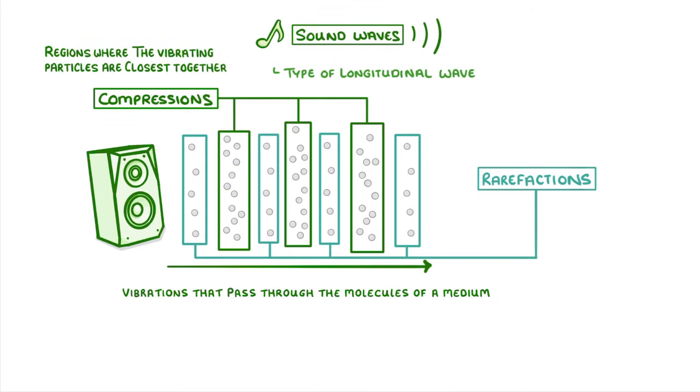Compressions are the regions where the vibrating particles are closest together, so all bunched up, whereas rarefactions are the regions in between where the particles are furthest apart, so all spread out.